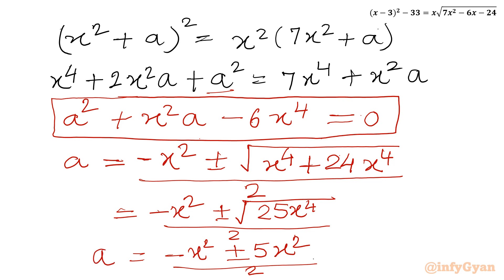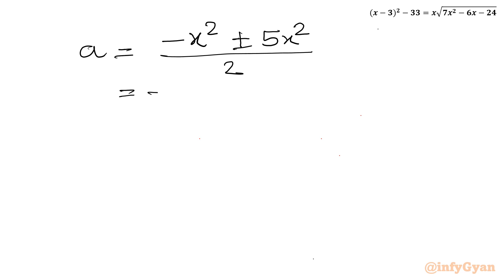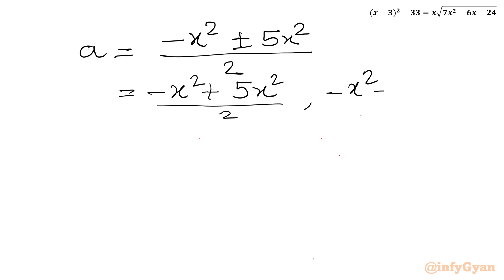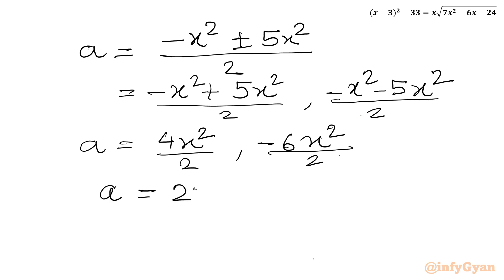So we have: minus x squared plus or minus 5x squared, divided by 2. With the plus sign: minus x squared plus 5x squared equals 4x squared, divided by 2, giving a equal to 2x squared. With the minus sign: minus x squared minus 5x squared equals minus 6x squared, divided by 2, giving a equal to minus 3x squared. So we have two values: a equals 2x squared and a equals minus 3x squared.